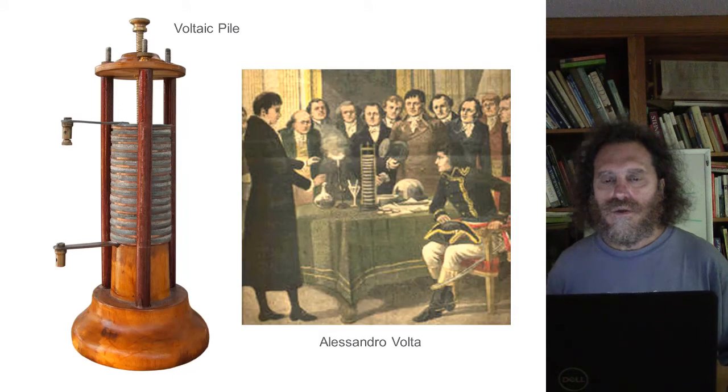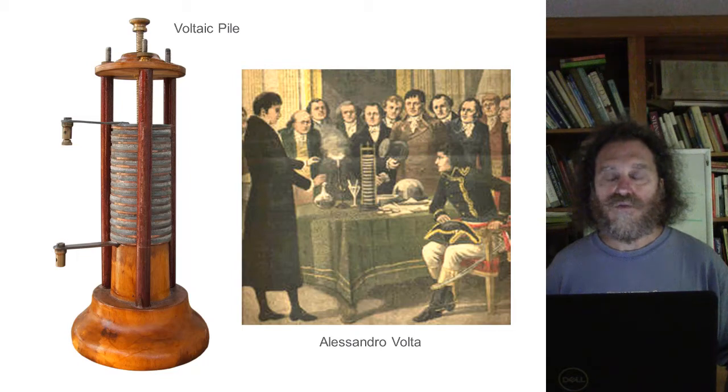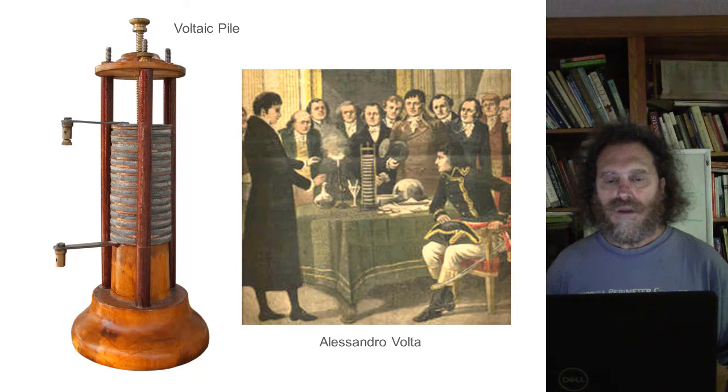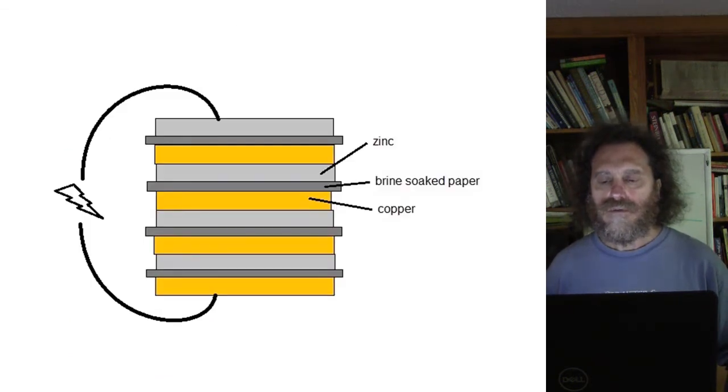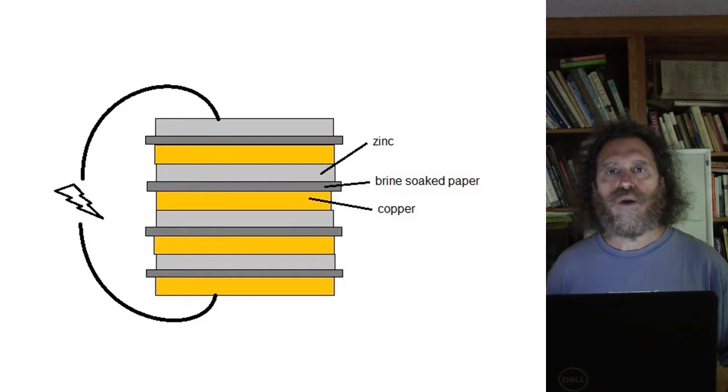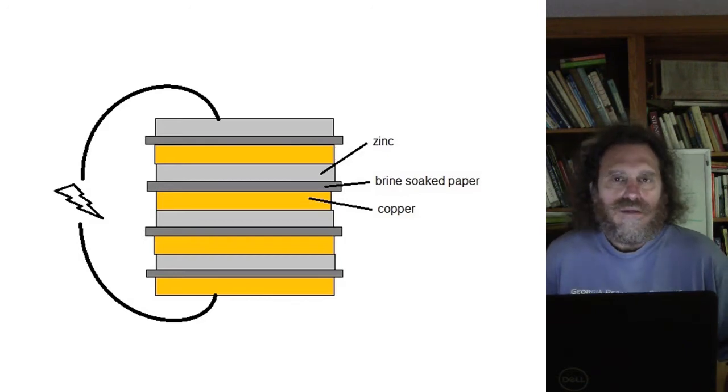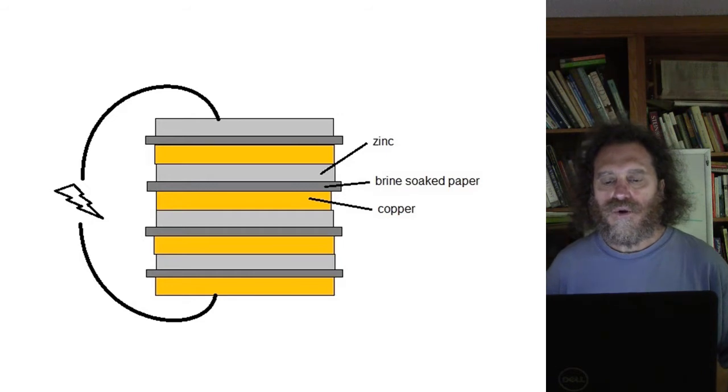One of the first batteries was built by Alessandro Volta. This is the scientist from whose name we get the volt, the unit of electric potential. What he did was build these voltaic piles. They contained discs of copper and then discs of zinc metal. Between those were brine soaked paper. Brine being salt water, something like sodium chloride or potassium chloride, salt water like sea water was soaked on paper and put between these.